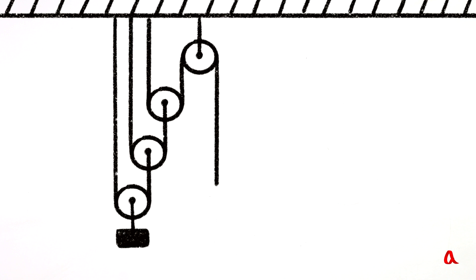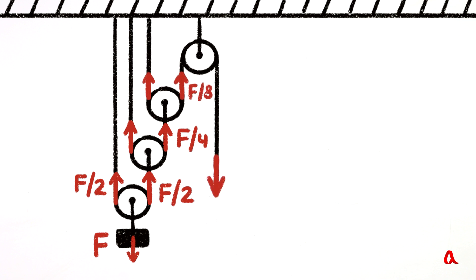The load is pulling the lower block down with force F. This force is divided equally between two ropes and equals half F for each rope. On the next block, half F is leveraged by two quarter Fs. And on the next one, quarter F is leveraged by two eighths Fs. This force is transmitted through the rope over the fixed block, so that an equal F divided by eight force is applied to the loose end of the rope.